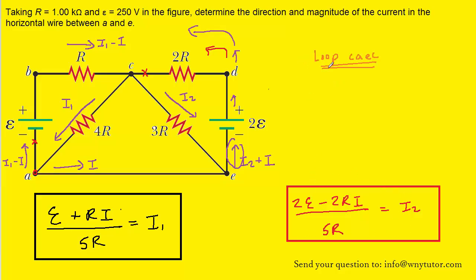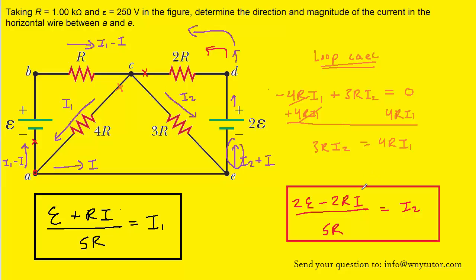One more loop rule: this time we look at loop CAEC. Starting here, we move to point A, then to point E, and then back to where we started. We're moving with the current through this resistor — a negative potential change equal to the resistance 4R multiplied by the current I1. We move along and come to the next resistor, where we're moving against the current marked I2. Since we're moving against the current, we have a positive potential change equal to the resistance 3R multiplied by the current I2. We then return to point C and our starting point, so we set this equal to zero.